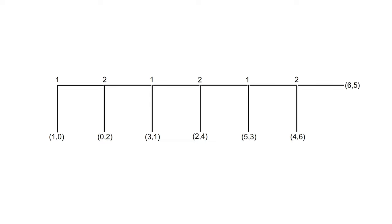The payoff when a player takes and ends the game is represented by the numbers in the brackets. The first number is the payoff for player one, and the second number is the payoff for player two. For example, if player one takes at the first node, they receive a payoff of one and player two receives a payoff of zero. At the final node, if player two passes, they receive a payoff of five and player one receives a payoff of six. If player two takes at that final node, they receive a payoff of six and player one receives a payoff of four.